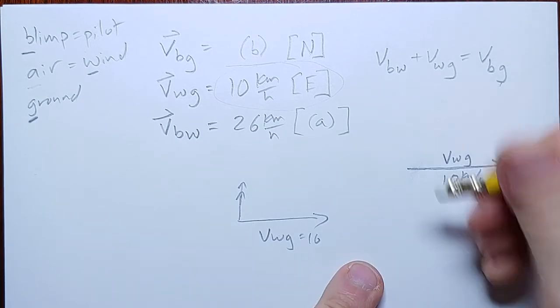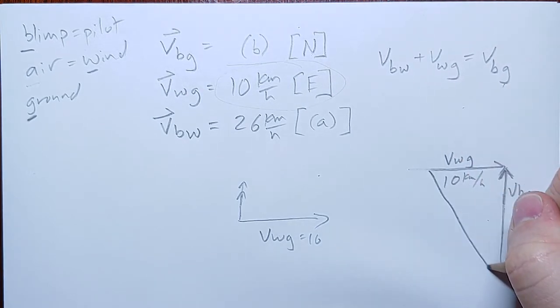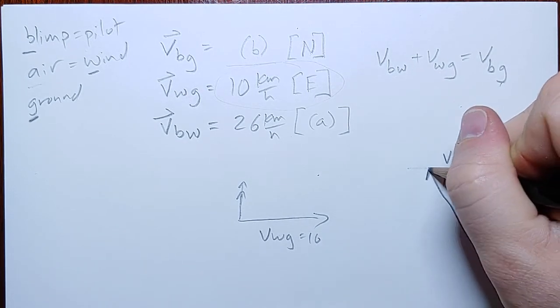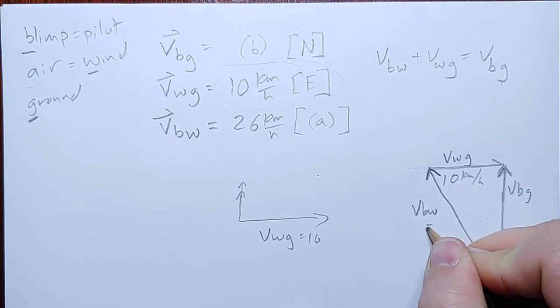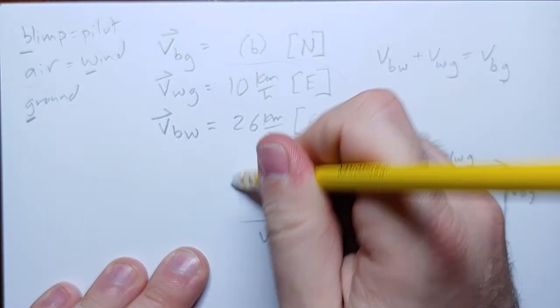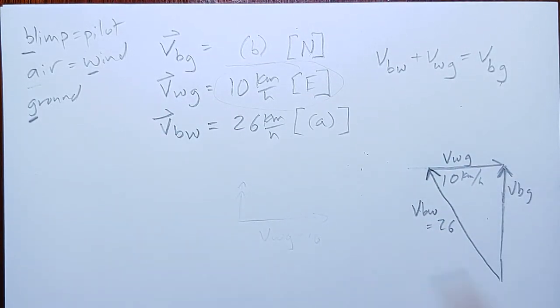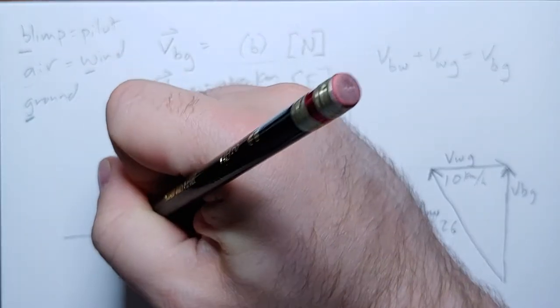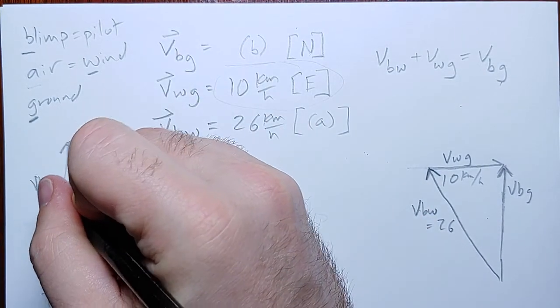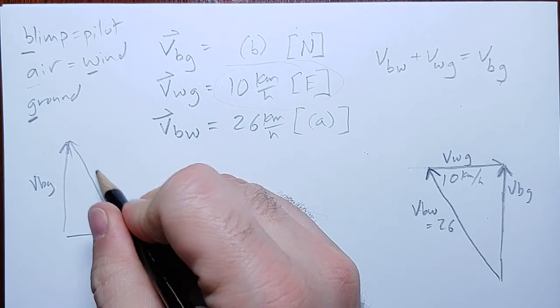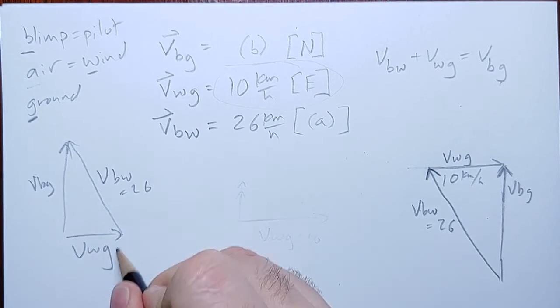Let me make this a little bit shorter. It fits on the camera here. Cool, something like that. Or, so this would be vbw is 26. Let me make it fit nicely. The alternative diagram, we can just add in the other order. So, we could go east, north of east, and get vbg going north. Vbw is 26, and vwg is 10.